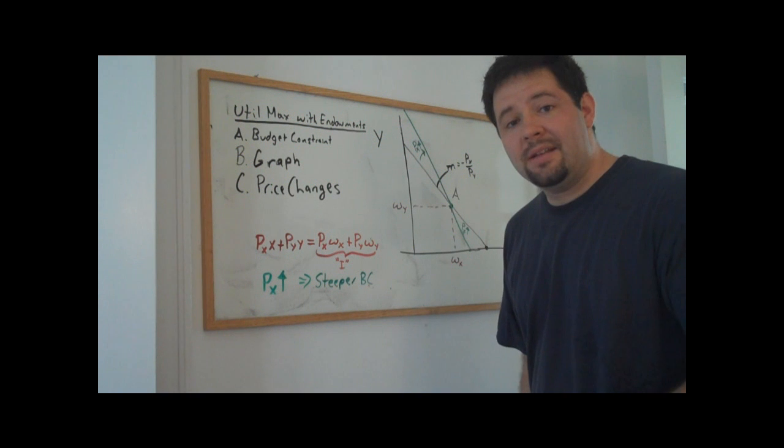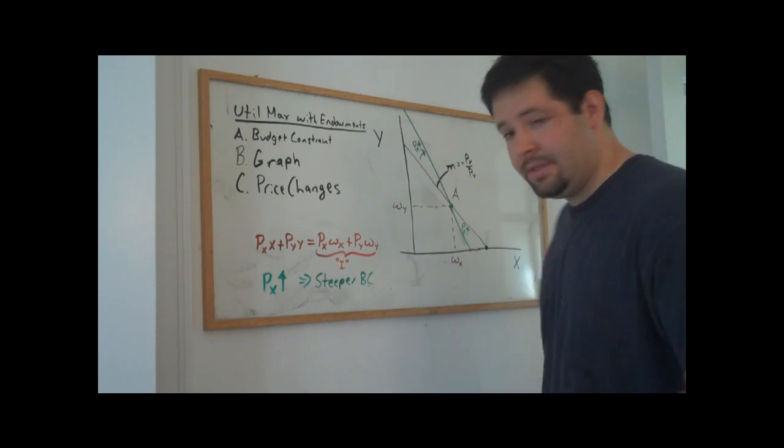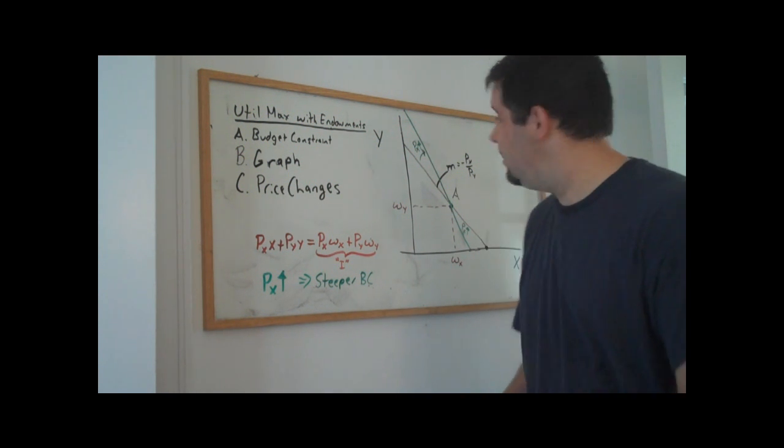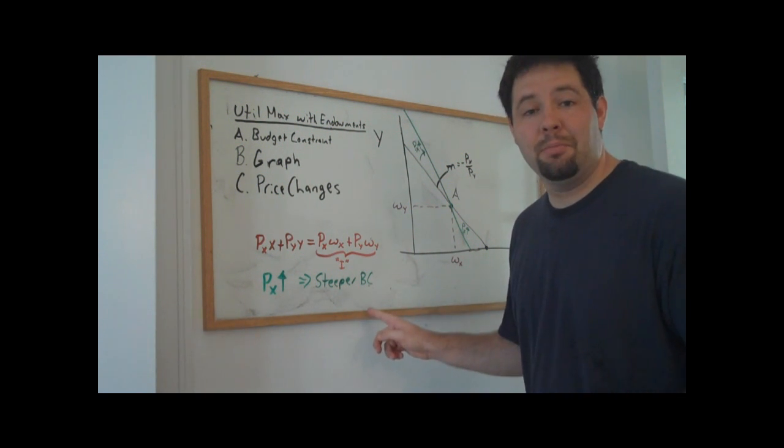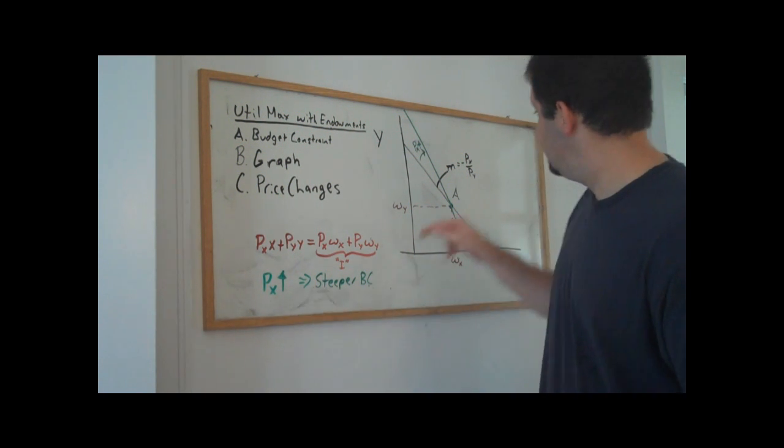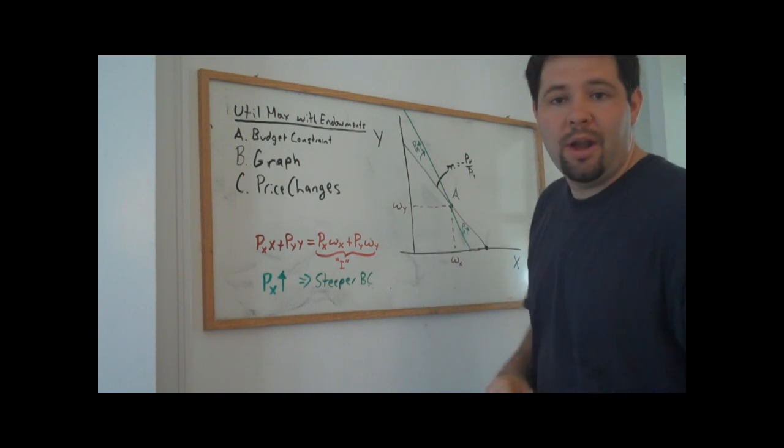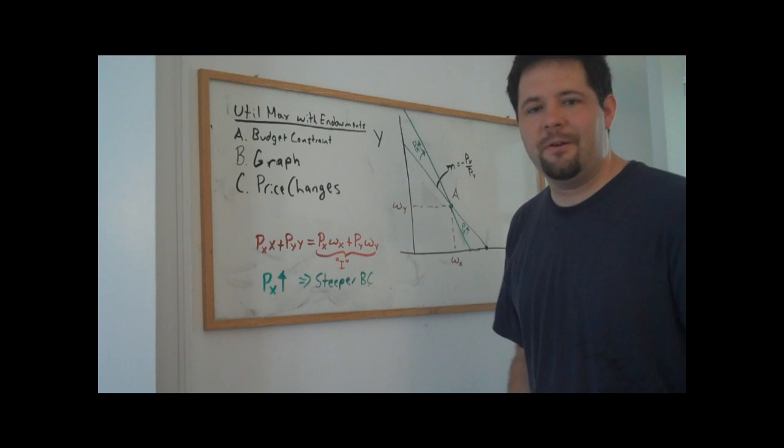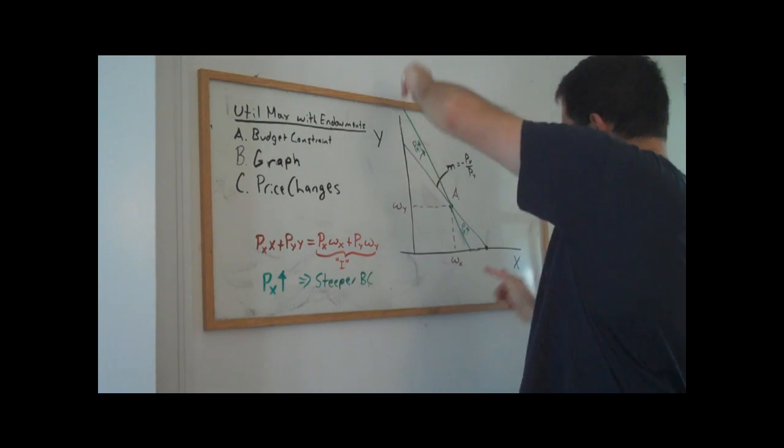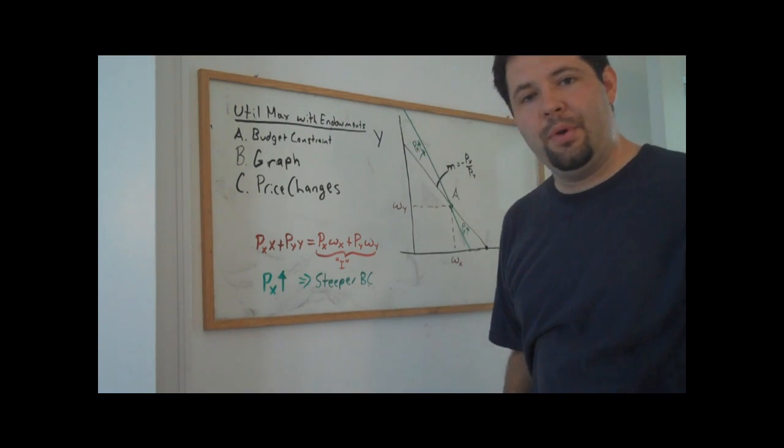Now we could also ask the question, what happens as the price of Y decreases? If the price of Y decreases, we also get this steeper budget constraint. If it decreases to the same price of X over price of Y ratio, we would get the exact same shift in the budget line. And it's going to be a pivot through the original endowment point.